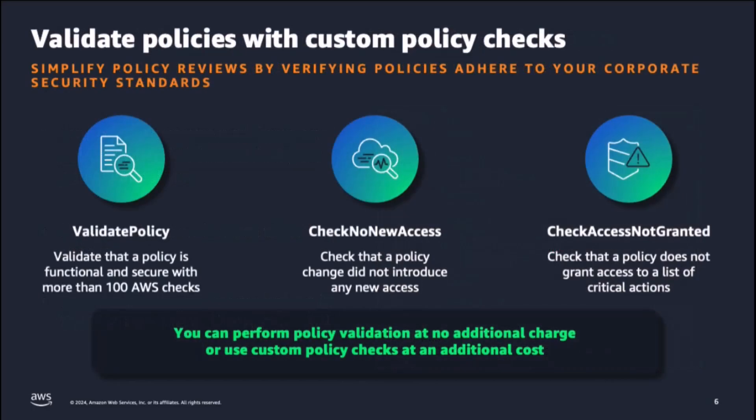While the Validate Policy API performs over 100 checks based on AWS security standards, you can now run custom policy checks based on your own security standards. The new custom policy checks feature uses automated reasoning to ensure that access policies written in the IAM policy language don't grant unintentional access and meet your security requirements.